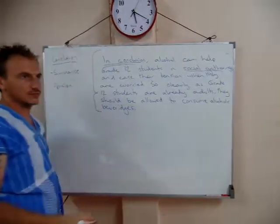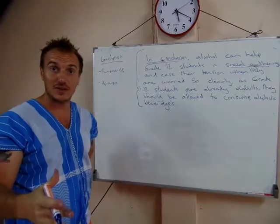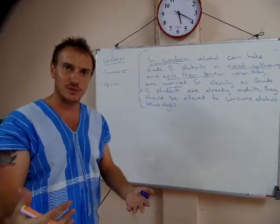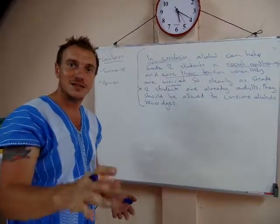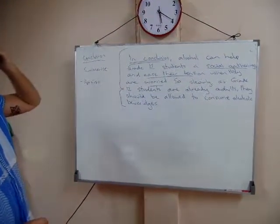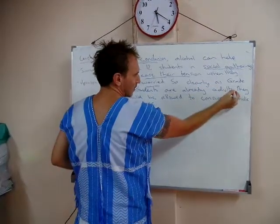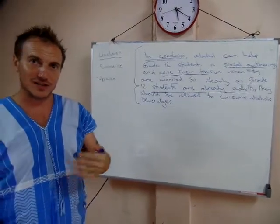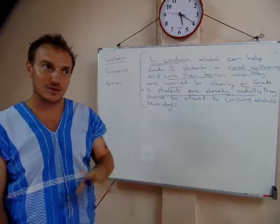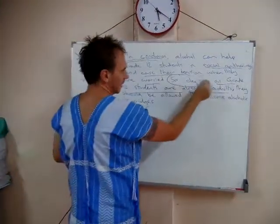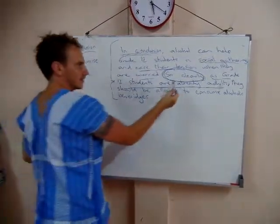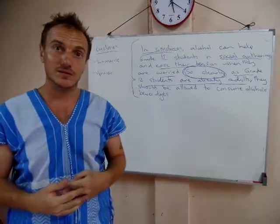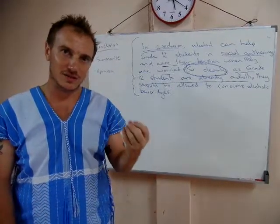Can help in social gatherings — can help them make friends. Making friends in social gatherings is the same idea but in different language. Ease their attention when they are worried — if you have a problem, you worry; easing your attention means helping you to solve the problem. Again, same idea, different language. The third idea — grade 12 students are already adults — appears as a clause between two commas. 'So clearly' introduces the final opinion. Consume and drink are different verbs for the same meaning; instead of just saying alcohol, we say alcoholic beverages. We're using different language for the same meaning.